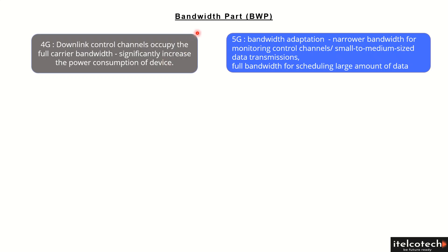Bandwidth part is a new concept in 5G where basically the whole given frequency spectrum band allocated to the telco can be further divided into different subparts. In 4G, the control channel in downlink occupies the whole given carrier bandwidth. So if 10 MHz is allocated for 4G technology, we are continuously transmitting that 10 MHz in downlink.